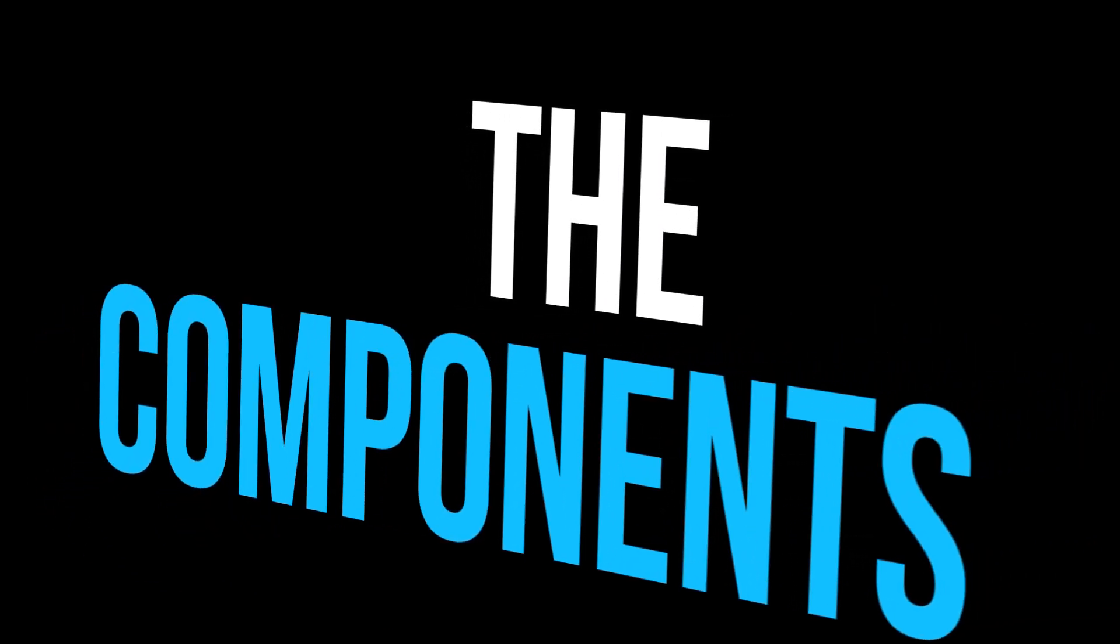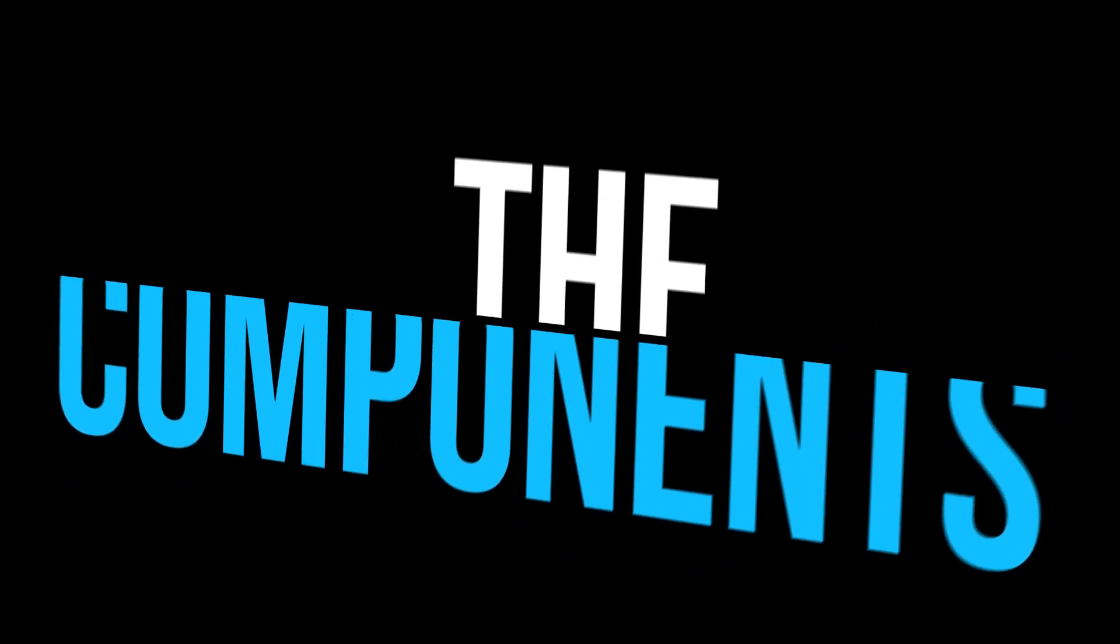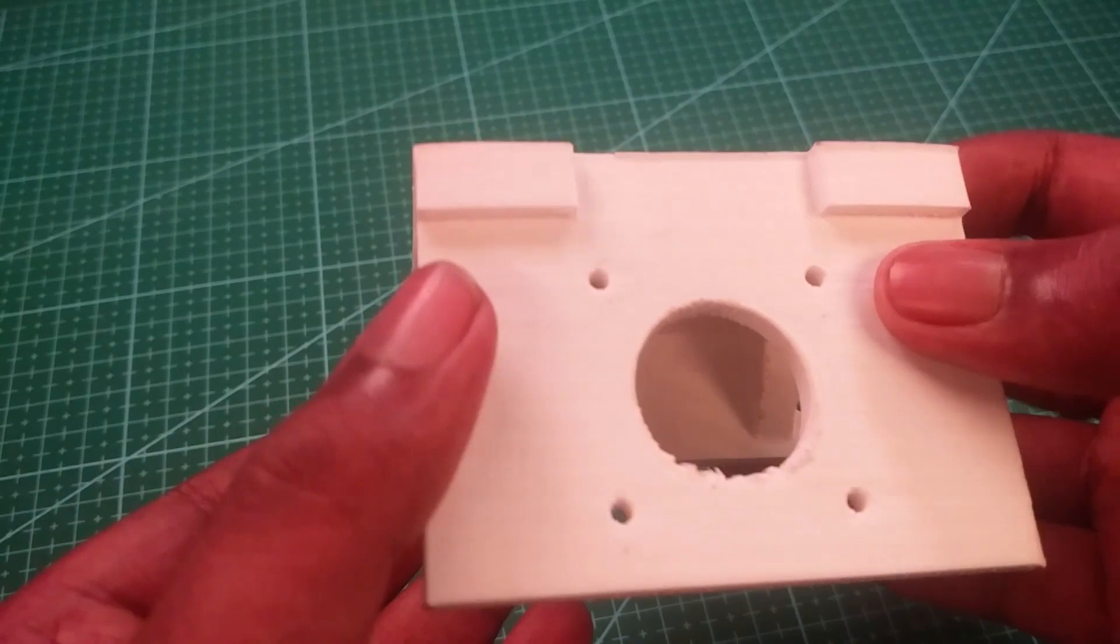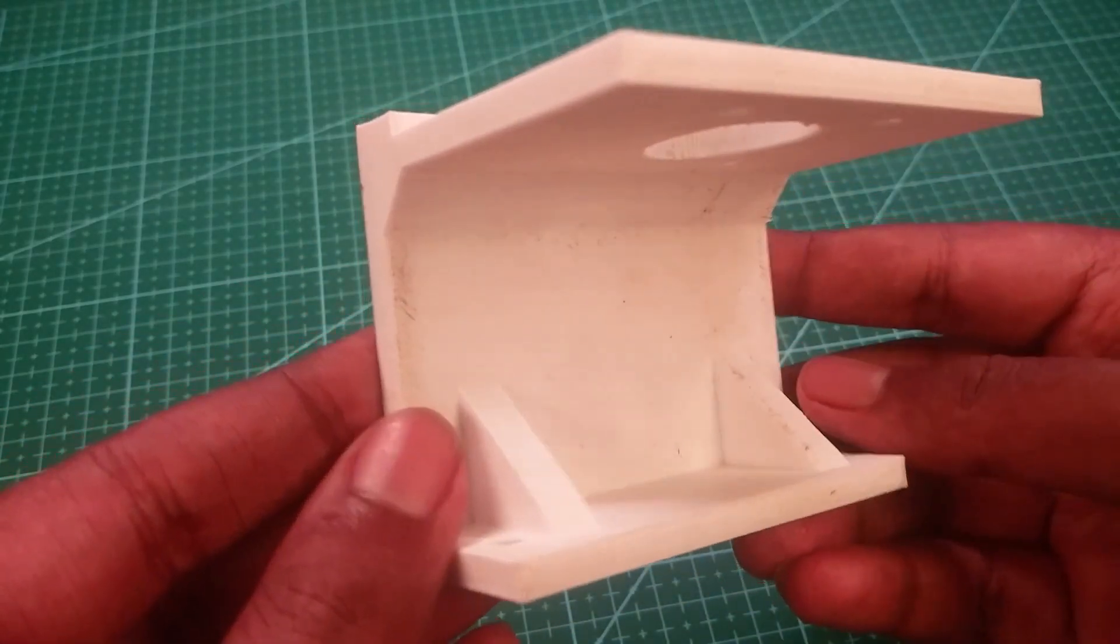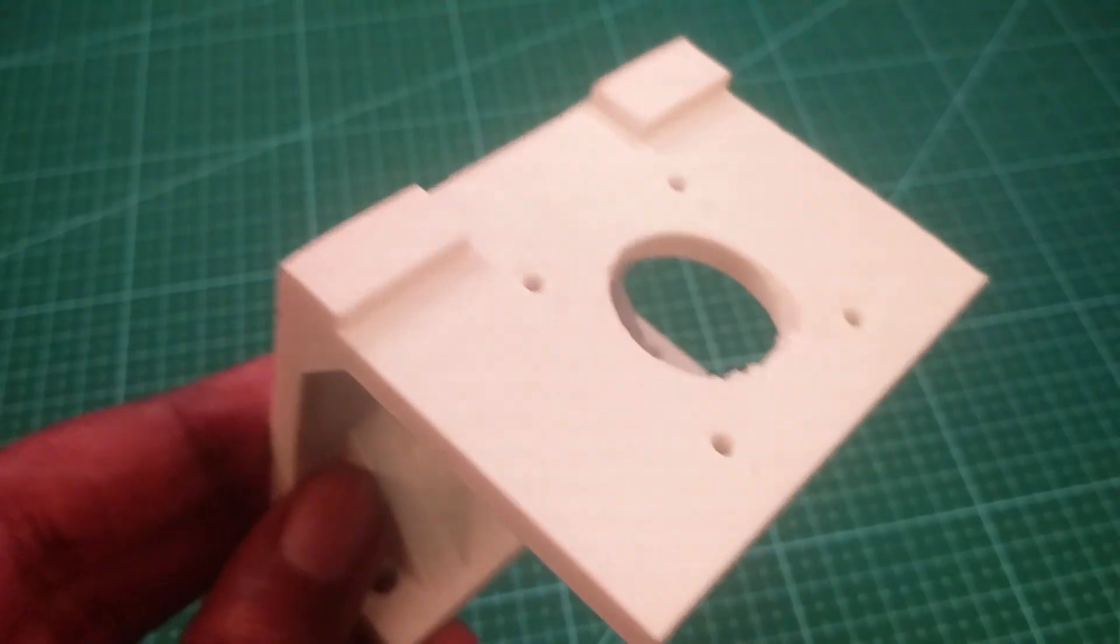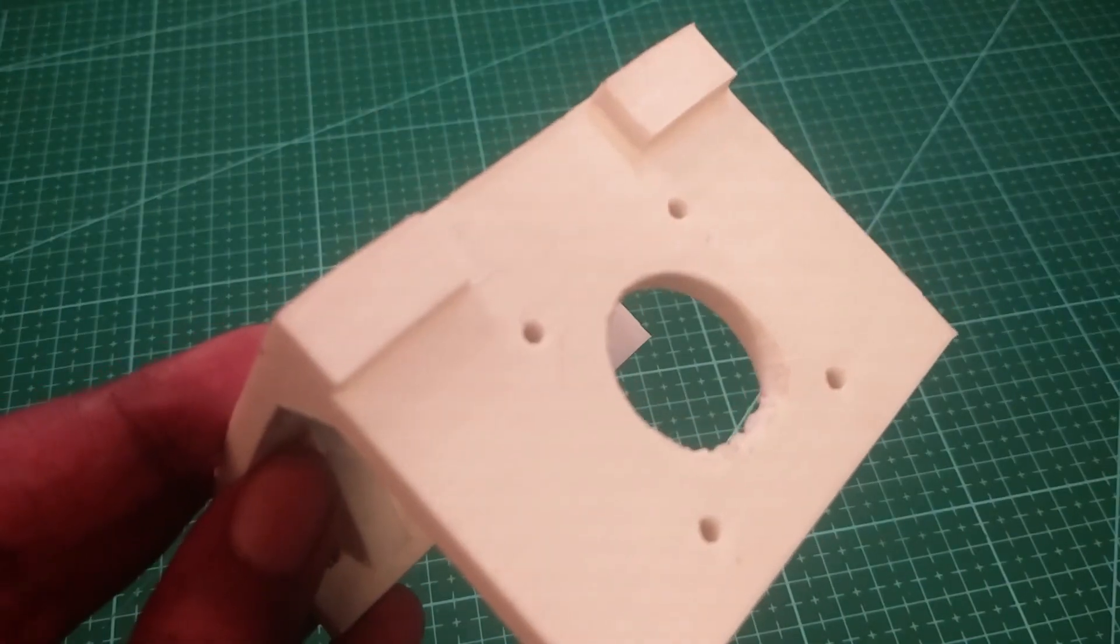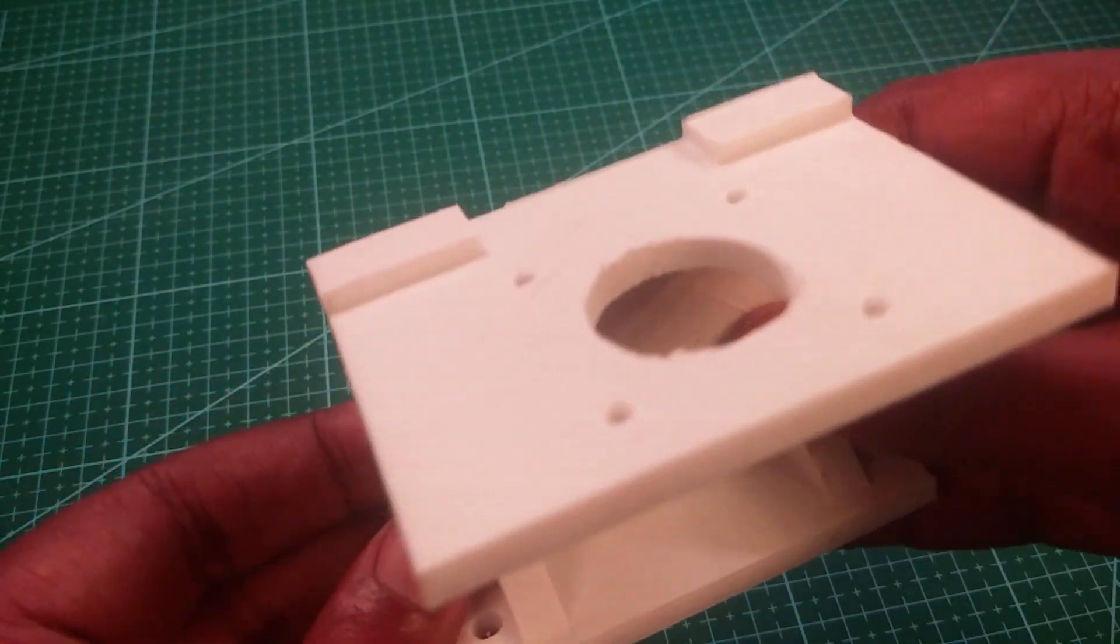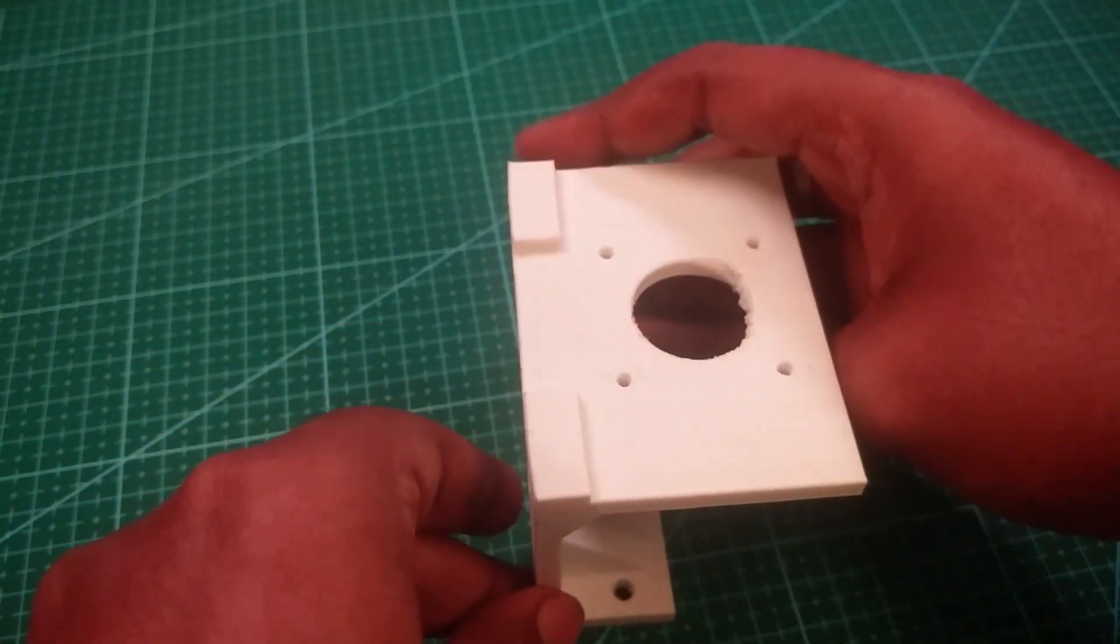Now let's have a look at the actual parts which we will be needed for this project. So this is our 3D printed part. This is printed out of white PLA with 75% infill. And this is the clamp for our stepper motor. We are using NEMA 17 stepper.